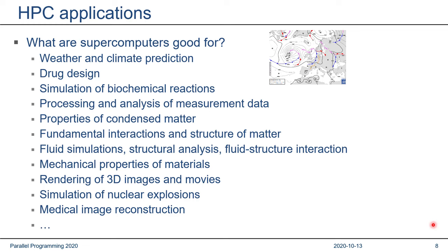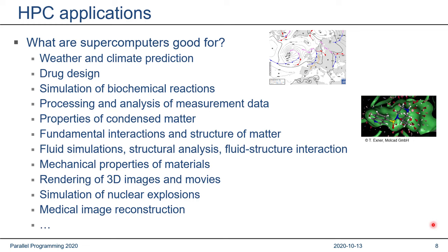Drug design and new medications — especially in the current situation, a lot of cycles are spent trying to design vaccines or drugs against the pandemic. The simulation of biochemical reactions is a big topic at the University of Erlangen, where a major part of compute cycles is spent on molecular dynamics codes and ab initio quantum simulation codes that explore reactions between complex molecules. Processing and analysis of measurement data from detectors or measurement devices in orbit is also very prominent here in Erlangen. The properties of condensed matter — at the chair of complex quantum systems where I did my PhD — were among the major uses of compute cycles in German supercomputing centers.